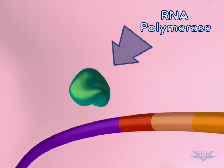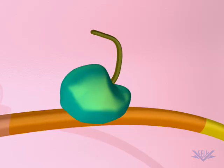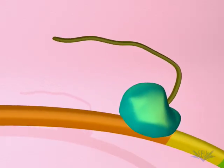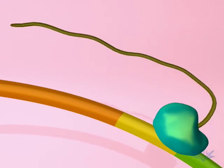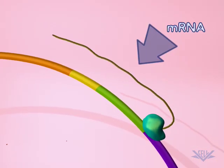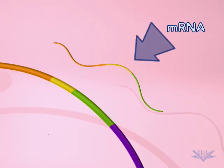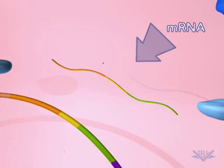At this point, RNA polymerase can begin transcription of the operon. Here, we show two of the three lac operon genes being transcribed into mRNA.